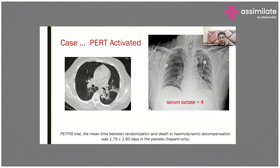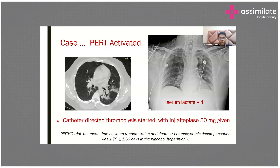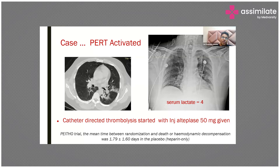In our patient, the CT scan showed this was an intermediate probability case — hypotension was not present. The expertise was available and the CT scan showed bilateral major pulmonary artery embolism, so catheter-directed thrombolysis was given using alteplase, which is a recombinant tissue plasminogen activator.